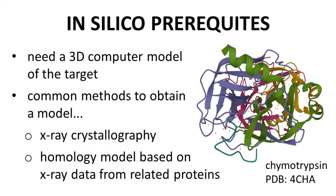Many targets cannot be crystallized. In that case, you may be able to use a technique called homology modeling. A homology model is generated by estimating the target structure through comparisons to known proteins with known 3D structures. Models from the homology approach are less certain, but sometimes are the only option.